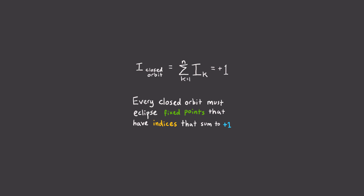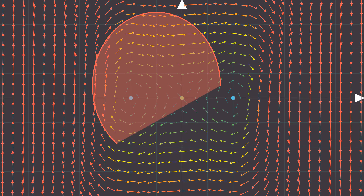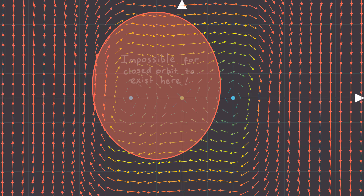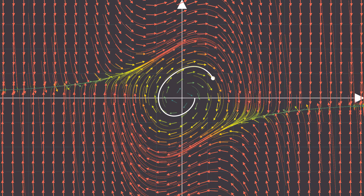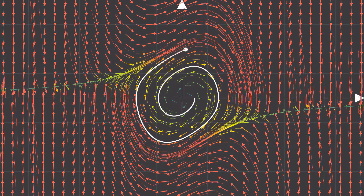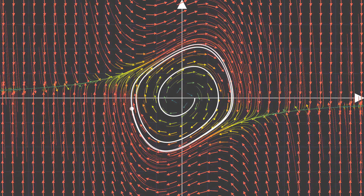Now I should clarify one downside. This rule states that all closed orbits have a net index of plus one, but that doesn't mean that all curves with a net index of plus one are closed orbits. The real power of this method comes from ruling out closed orbits. Note that it's genuinely impossible for any closed orbit to exist that surrounds just this saddle and center, because their indices sum to zero and not plus one — so no closed orbit can exist anywhere inside this region. We have some global information about our nonlinear differential equation regarding the existence of periodic solutions. But how can we know more precisely what our periodic solution is and how to characterize it? We'll talk more about that in the next video.